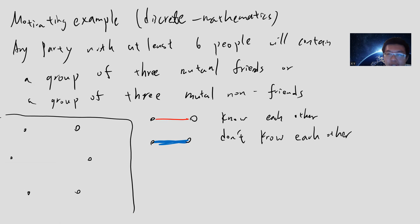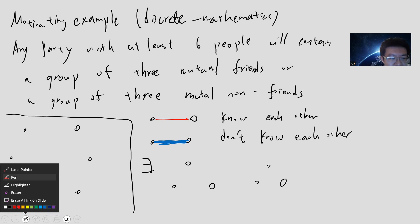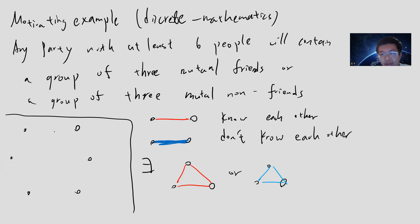So this theorem basically says that if you try to draw this graph, there is a red triangle - there are three points where they have a red triangle or three points where they have a blue triangle. You can play around with it. I will give you the proof, but let me just prove it using this graph.